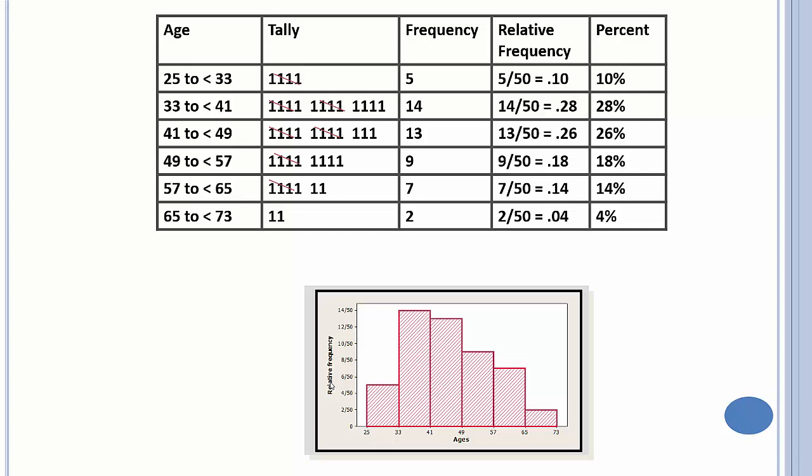And then we take the tally marks and we make them frequencies. We just go, okay, that's a 5, that's a 14. Then you can divide them by the total number, which was 50, which gives you percents. And then you can go down there and make a relative frequency histogram.